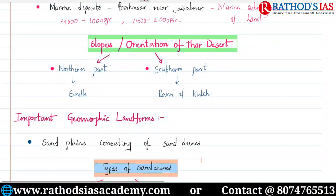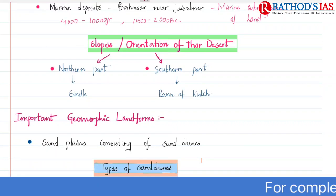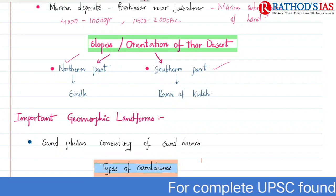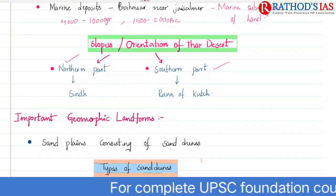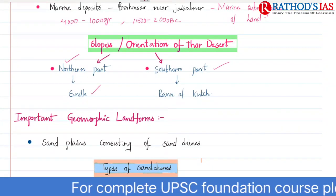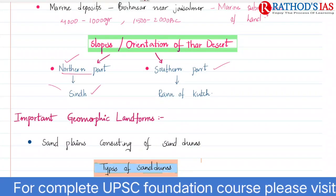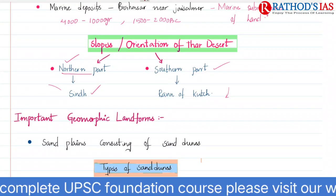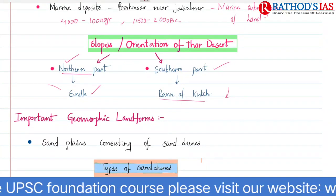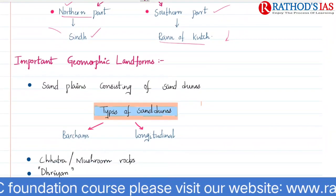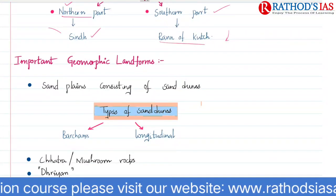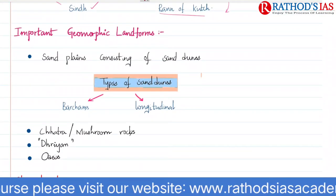Now let us see the slopes or orientation of the Thar desert. The Indian desert has mainly two parts based on slope: the northern part and the southern part. The slope of the northern part is towards the Sind, and the southern part slope is towards the Rann of Kutch.